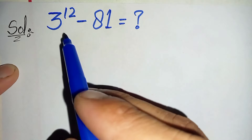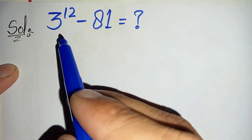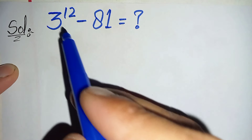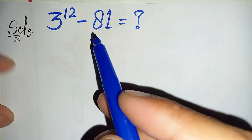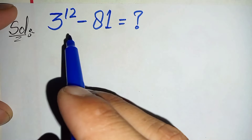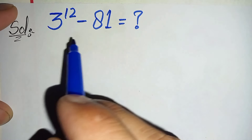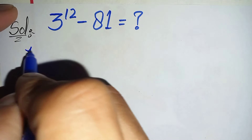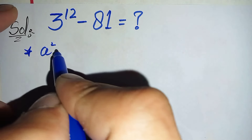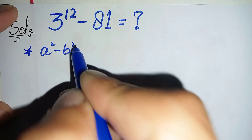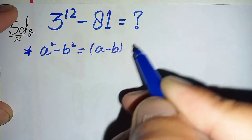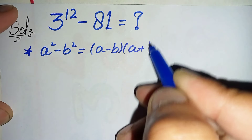Hello everyone. How to solve and find the value of this nice simplification math problem: 3 raised to power 12 minus 81. So here I will try to make an algebraic identity in the left hand side of this equation — the identity a squared minus b squared is equal to a minus b times a plus b.